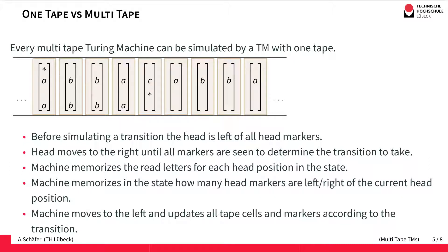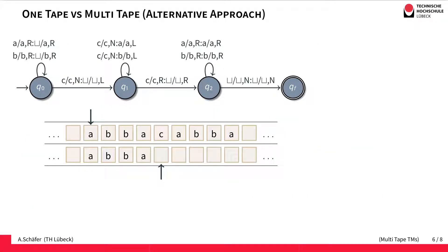This approach naturally generalizes to more than two tapes — it works the same for three, four, and even more tapes. Instead of fusing the contents of two tapes and the corresponding head positions into one letter, there's an alternative approach for simulating multiple tapes using only one tape. The idea is that we take all the cells visited so far on the second tape.